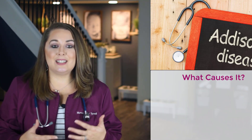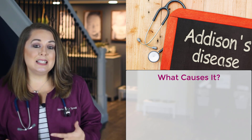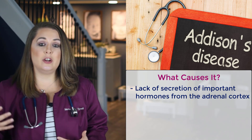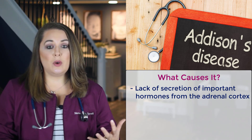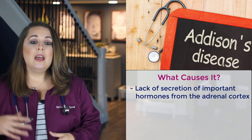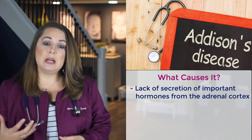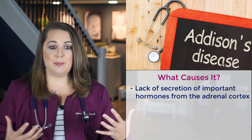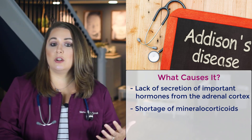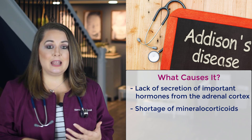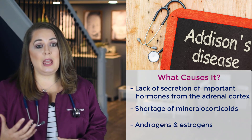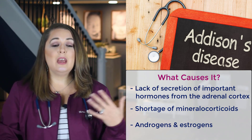Let's start with Addison's disease first. Addison's disease is, in a nutshell, caused by the lack of secretion of important hormones from the adrenal cortex, which is located on top of the right kidney. These hormones suppress the body's immune response and help control stress responses. There's also a shortage of mineral corticosteroids like aldosterone, which help to maintain electrolyte balance, and a shortage of androgens and estrogen, which play a crucial role in sexual development and reproduction.